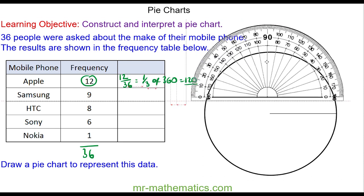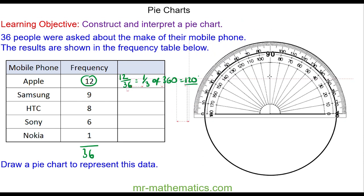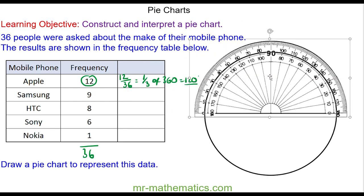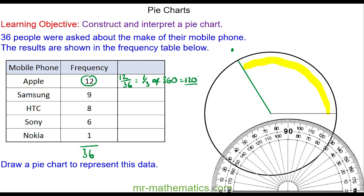We do this by placing our protractor in the center of the circle, and we're going to go 120 degrees from zero, which is here. We put a mark at this point, and now we draw another radius from the center to the green point. So this is 120 degrees, which we can label Apple.